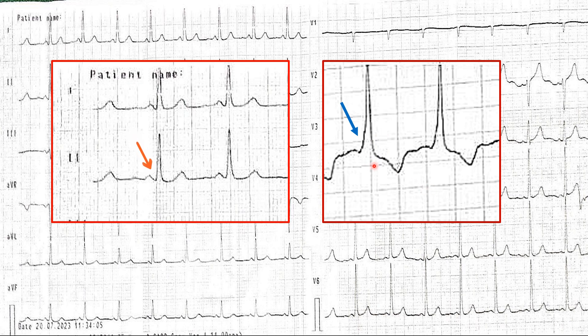In WPW, the PR is short and there is slurring or a delta wave — which is absent here. So what is the reason behind that? Is there something else going on?